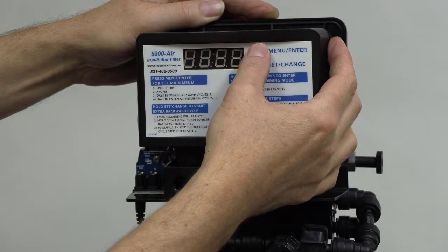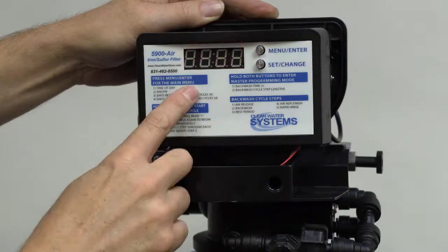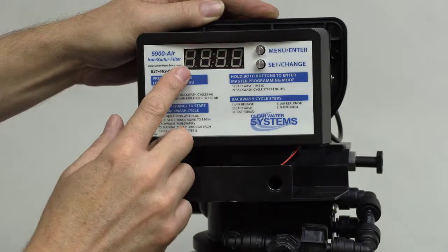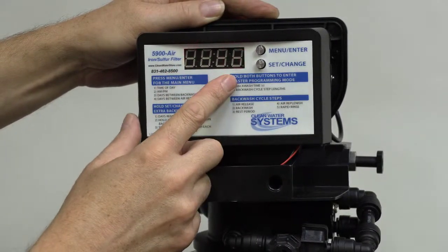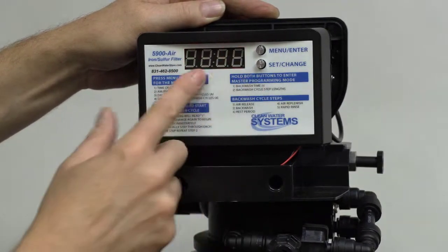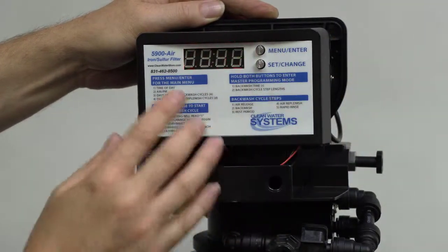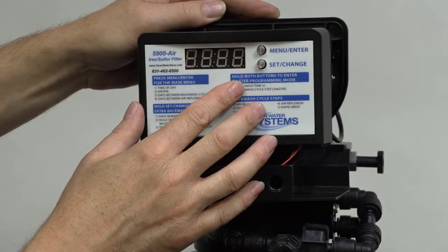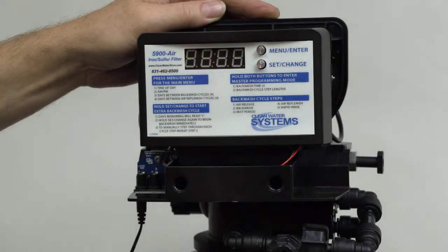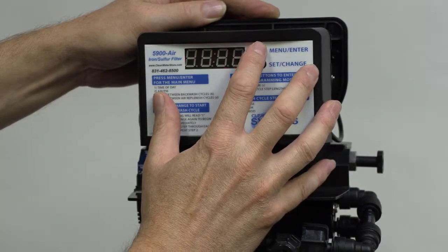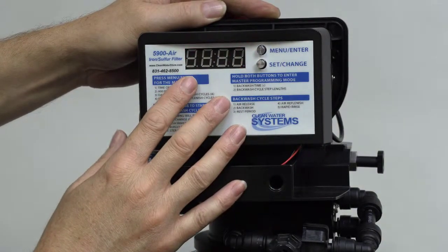Go on to the next setting. The first cycle step is automatic at 6 minutes - that's the air release step. The second step is for 10 minutes, and that's the backwash step, so we're going to leave the default programming the way it is. Now we're going to go to the next step. Step number 3 is a rest step, and that's just the bed calms down between the next cycle, and we're going to leave that at 5 minutes.